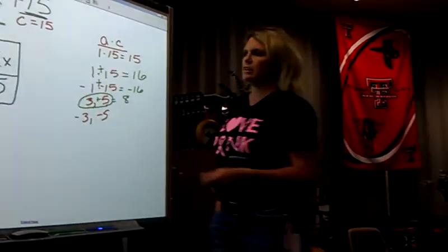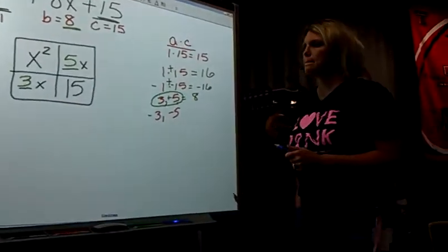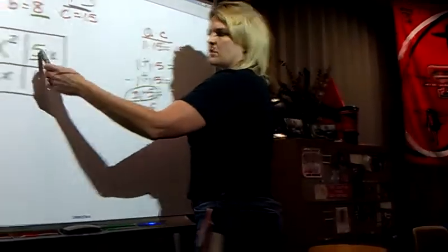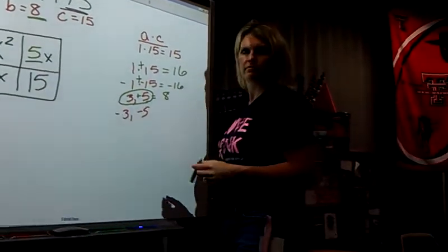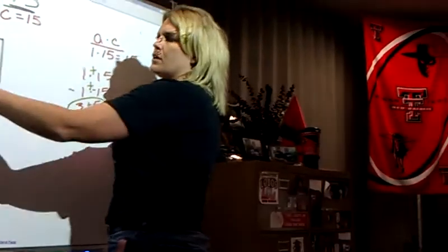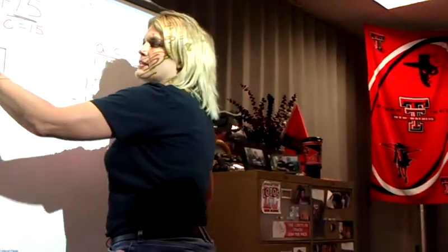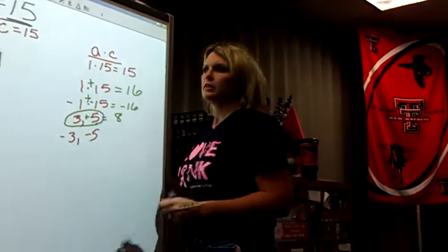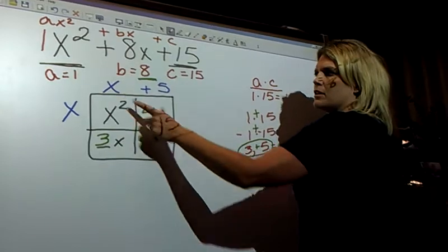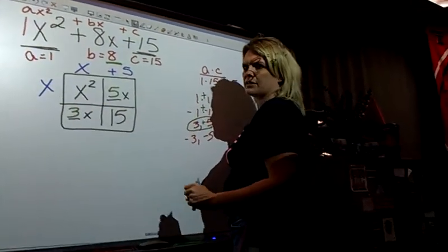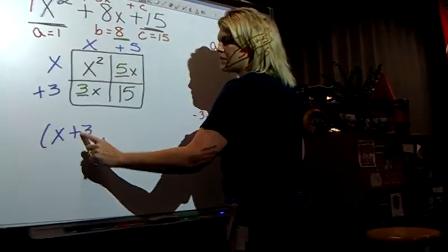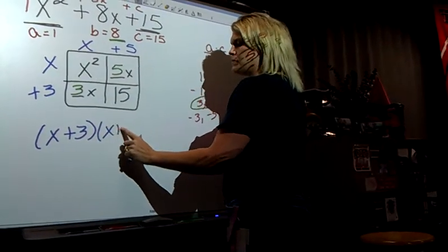Now you treat it kind of like a puzzle. So the x always goes in the bottom? Yes, these always are the x's. But I mean you have to put the 3? No, this could be a 5 and that could be a 3. X squared, x and x is how it splits up. X times what gives you 5x? 5. X times what gives you 3x? 3. So your answer is x plus 3 times x plus 5.